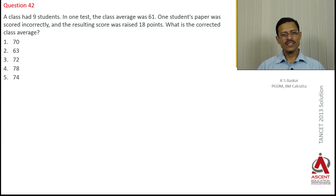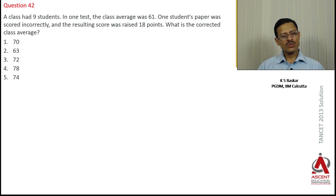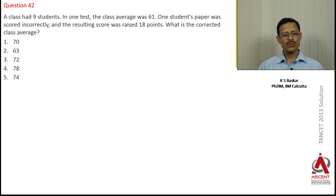Let's quickly look at the question. A class had 9 students. In one test, the class average was 61. One student's paper was scored incorrectly and the resulting score was raised by 18 points. What is the corrected class average?